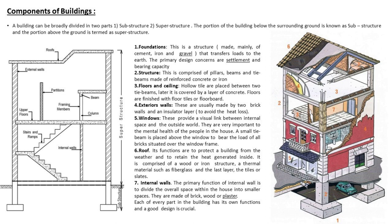If we are talking about the building, it is divided into two parts: one being substructure and one being superstructure. If you see the left-hand side image, from below the ground there is a line going down which indicates substructure — the portion of the building below the surrounding ground. Whereas the portion above the ground is termed as superstructure.